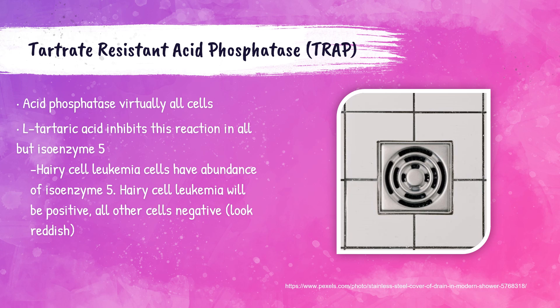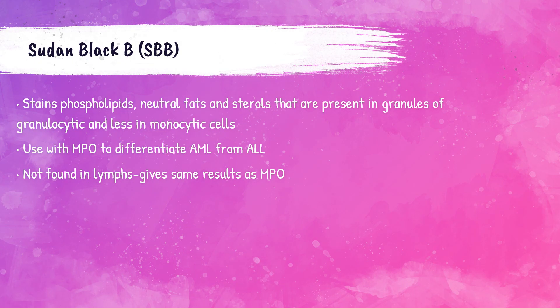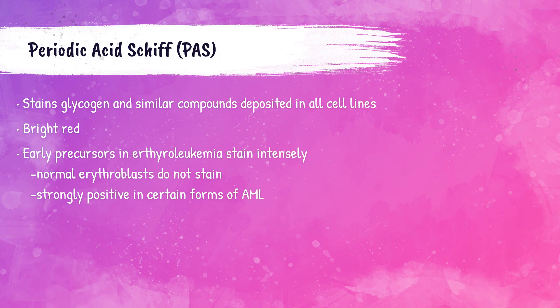Moving to non-enzymatic stains: Sudan Black B (SBB) stains the phospholipids, fats, and sterols present in granules of granulocytic cells and monocytic cells, though less intensely in monocytes. It does not stain lymphocytes, making it similar to the MPO stain but using a non-enzymatic method. It helps differentiate AML from ALL.